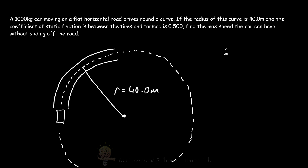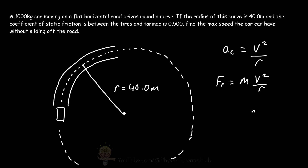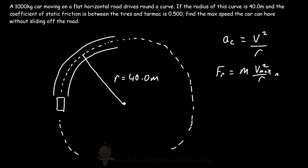The centripetal acceleration equals the velocity squared of the car divided by the radius of the circle. The radial force acting on this car equals the car's mass multiplied by this centripetal acceleration — this is Newton's second law. Our goal is to find the maximum speed just as the car is about to skid off the road. The maximum force of static friction is equal to the coefficient of static friction multiplied by the normal force.